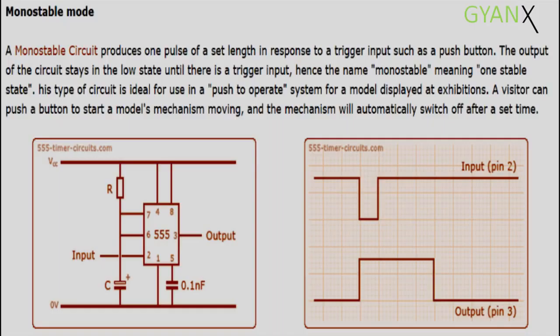The output of the circuit stays in the low state until there is a trigger input, hence the name monostable, meaning one stable state.